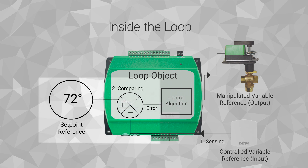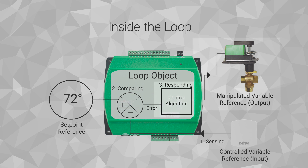Next, we compare the measurement of the current condition to the desired set point. The set point may be a fixed value maintained in either a loop object or value object, or from a user input device such as a thermostat. The control algorithm then responds within the loop object by reacting to any error that may exist by generating a corrective control signal.